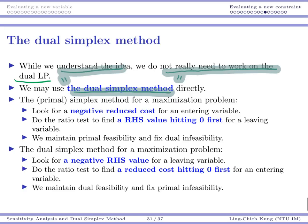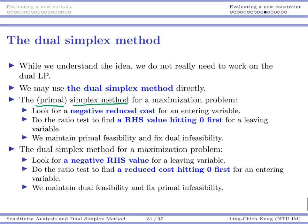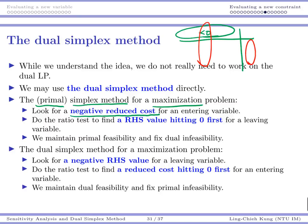Let's review how the primal simplex method works. For a maximization problem, we look for negative reduced costs in the top row. Once we find a negative number, we perform a ratio test: the entering column values are denominators and the right-hand side values are numerators. We find the right-hand side value that first hits zero — that variable becomes the leaving variable, because we cannot violate primal feasibility.